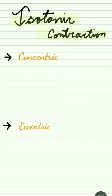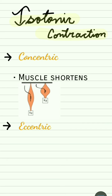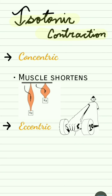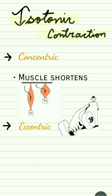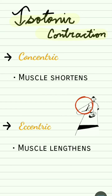In concentric contraction, the muscle is shortened. For example, in this image, whenever the dumbbell is being raised towards the body, the arm is shortened and so the muscle is also shortened.